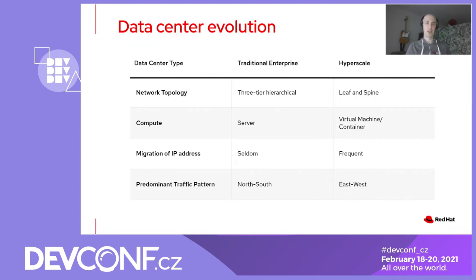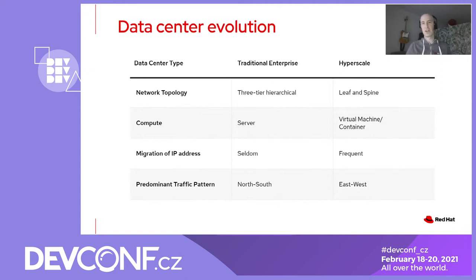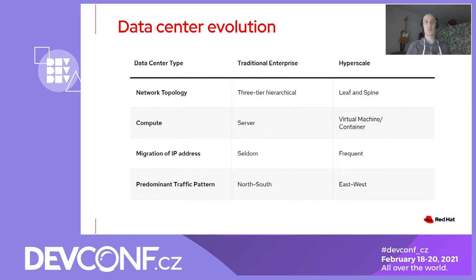The unit of compute has also changed in the data centre. Previously, we deployed workloads and applications in over-provisioned servers within a rack. Now our applications are hosted in containers and virtual machines, and as such the density of IP addresses within a rack has increased quite dramatically. The mobility of those IP addresses has also changed — whereas previously an IP address was associated with a server within the rack, now we have IP addresses associated with virtual machines that can be moved throughout the data centre, and also IP addresses associated with containers which can be brought up or destroyed quite quickly.